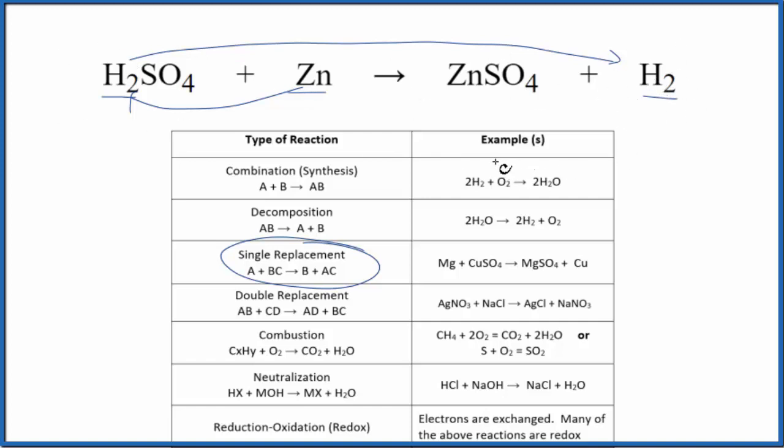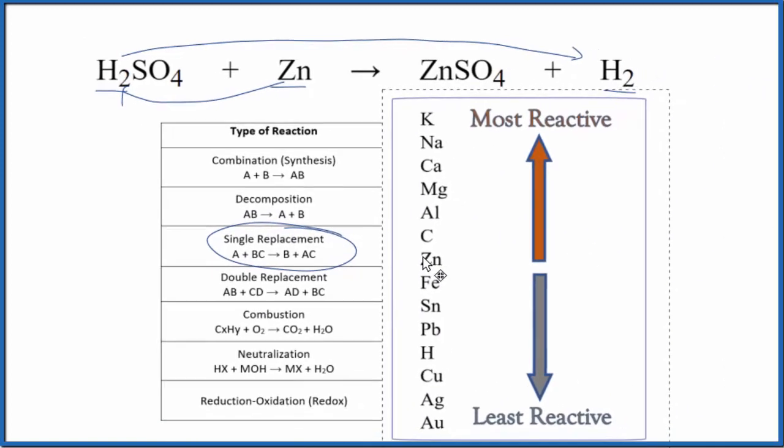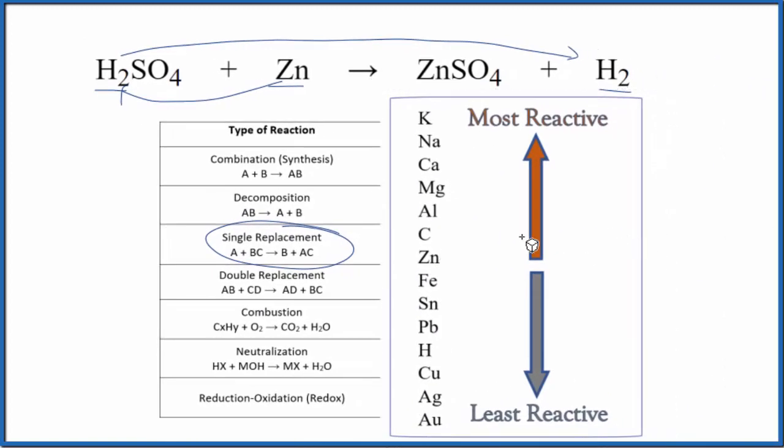With these single replacement reactions it's a good idea to take a look at the activity series to see if the zinc actually is strong enough to push the hydrogen out. If we look at the activity series here we're looking for zinc and then hydrogen. Zinc is right here and here's hydrogen. The more reactive elements are at the top. Zinc is more reactive than hydrogen so zinc is going to push the hydrogen out. This reaction will take place as written.